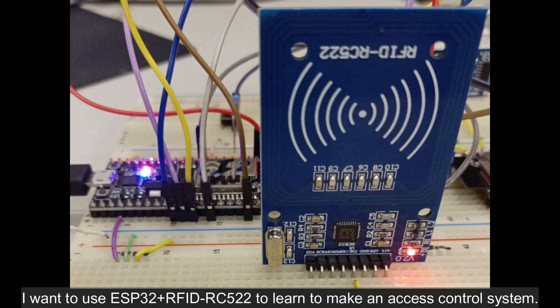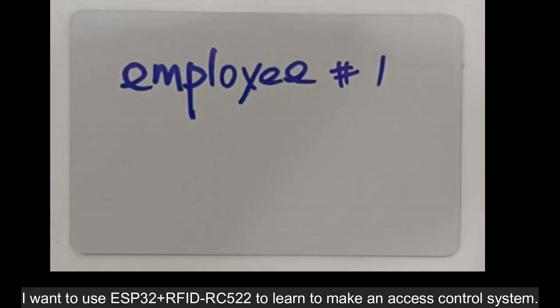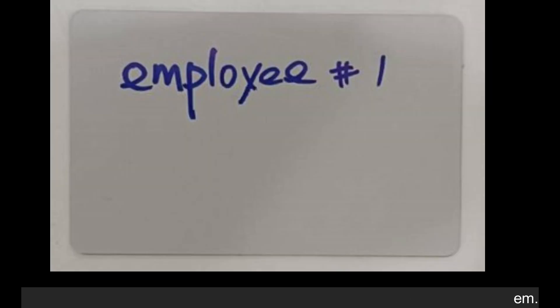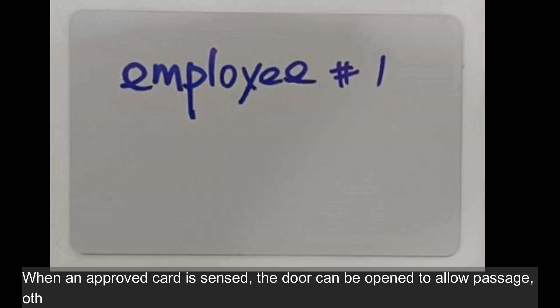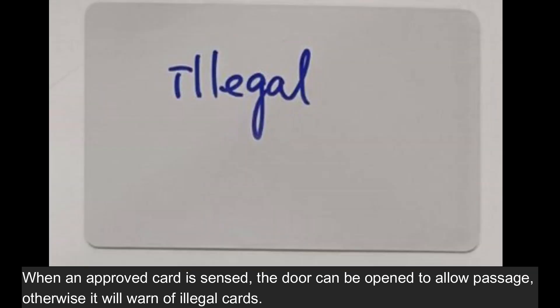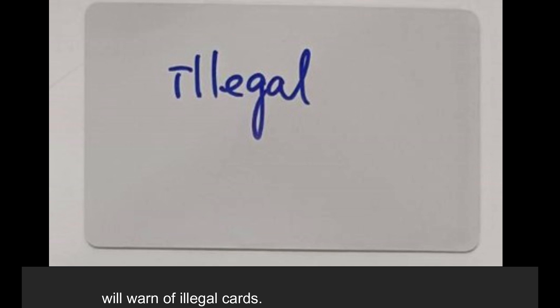I want to use ESP32 plus RFID RC522 to learn to make an access control system. When an approved card is sensed, the door can be opened to allow passage; otherwise it will warn of illegal cards.